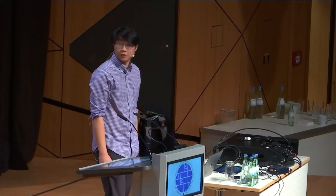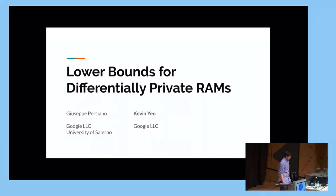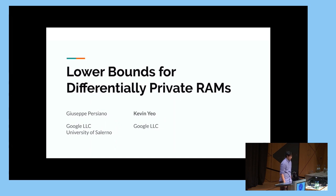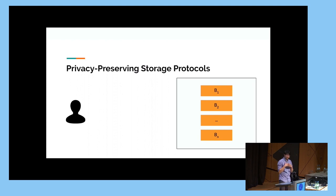Thanks for the introduction. So like I said, I'm Kevin. I'm here to present our work on lower bounds for differentially private RAMs, and this is a joint work with Pino Persiano. Before we begin, I want to describe the scenario. Differential privacy here means something a little different than what's been appearing in the last two talks, so let's go through it a little slowly.